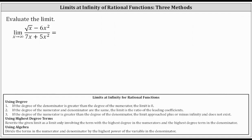We want to evaluate the limit of the function as x approaches infinity. For this example, we'll take a look at three methods for determining this limit at infinity. In previous examples, the rational functions have polynomials in the numerator and denominator. In this case, though, because of the square root in the numerator, the numerator is not a polynomial, but we can still apply some of the same rules to determine this limit.